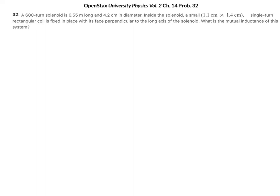Let's look at OpenStax University Physics, Volume 2, Chapter 14, Problem 32. A 600-turn solenoid is 0.55 meters long and 4.2 centimeters in diameter. Inside the solenoid, a small 1.1 centimeter by 1.4 centimeter single-turn rectangular coil is fixed in place with its face perpendicular to the long axis of the solenoid. What is the mutual inductance of this system?